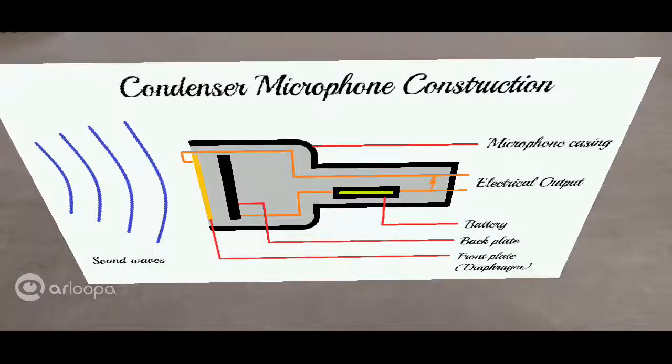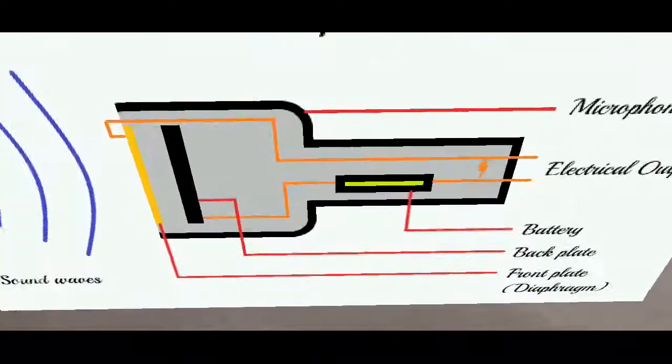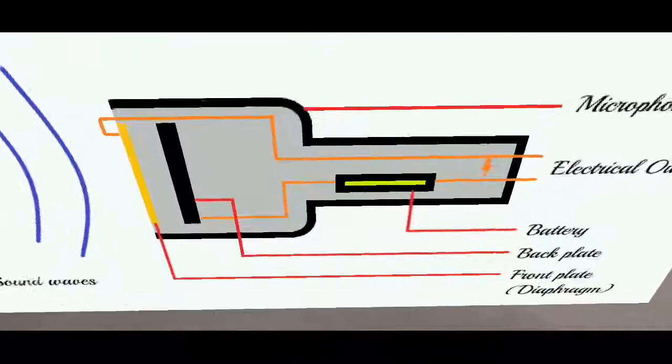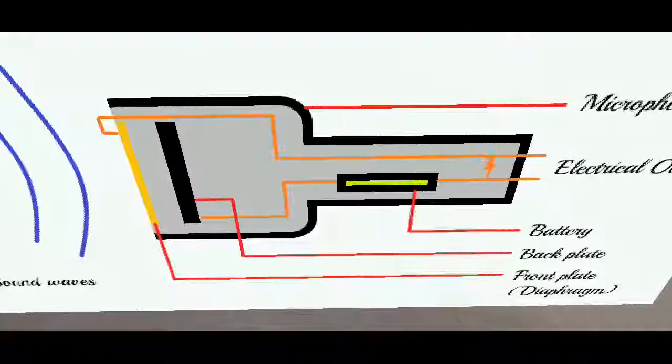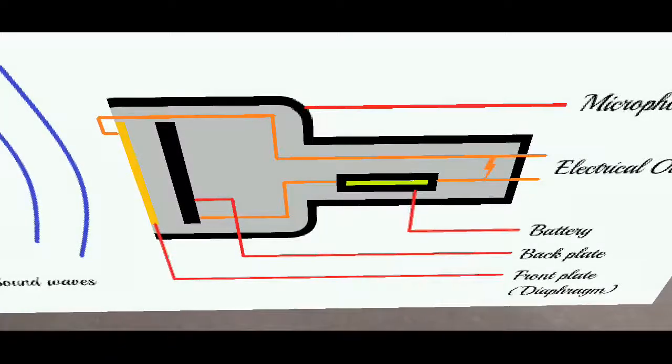So what is a capacitor? A capacitor is an electronic component that is used to store charge in the form of an electrostatic field. So the capacitor usually has two plates. In this case, there is a golden plate and there is a black plate. So the golden plate is a free moving plate and here's the diaphragm of the microphone, and the black plate is a fixed plate, also called as a back plate.